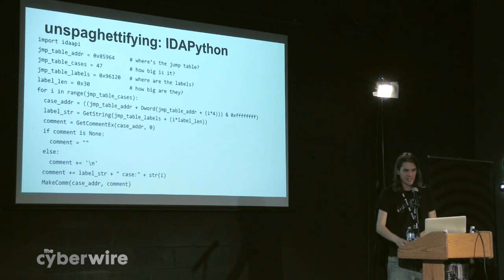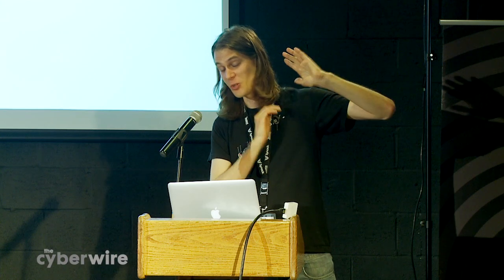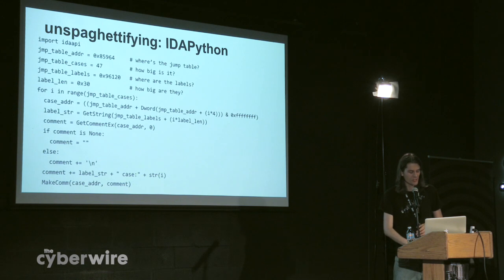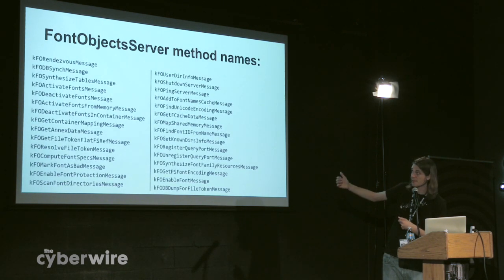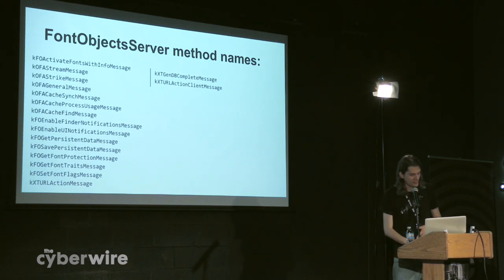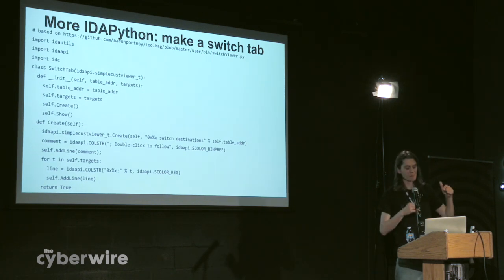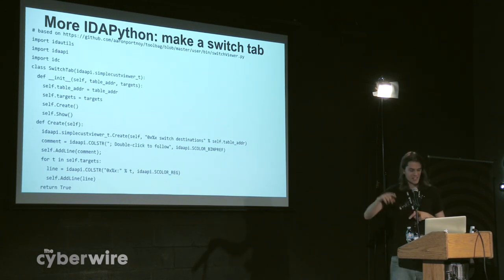Here's a little bit of IDA Python to help. It turns out this binary also has a nice string table that gives you human-readable names for all of those switch jump targets. So this IDA Python script annotates all of those jumps, which is very useful. You find 47 different methods: rendezvous message, ping server message, shutdown server, user dir info message, all kinds of crazy stuff. Another useful IDA Python script based on Aaron Portnoy's IDA Toolbag lets you click on the jump statement and create a new IDA window that lists all of the switch destinations so you can go through each one.